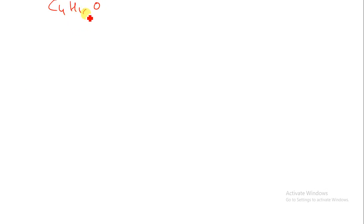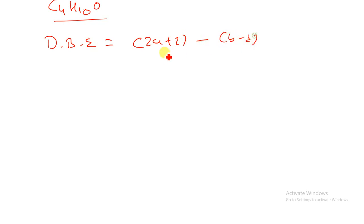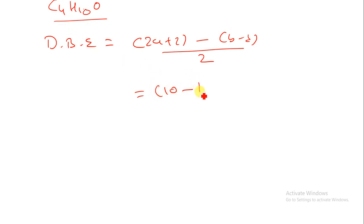Let us take one more example. The molecular formula is C4H10O. Calculate the DBE: (2×4 + 2 - 10) / 2 = (10-10)/2 = 0. Note that oxygen is a divalent atom and is not considered in the DBE formula — only trivalent atoms like nitrogen are counted.